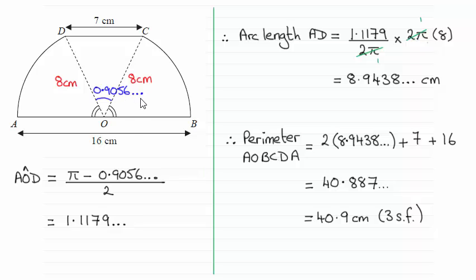To get the angles either side here, they're equal. I've just taken pi radians, the equivalent of 180 degrees, taken away the angle that we found in part A and then divided it by two. That gives us the angle AOD, which is the same as angle COB, 1.1179 and so on radians.